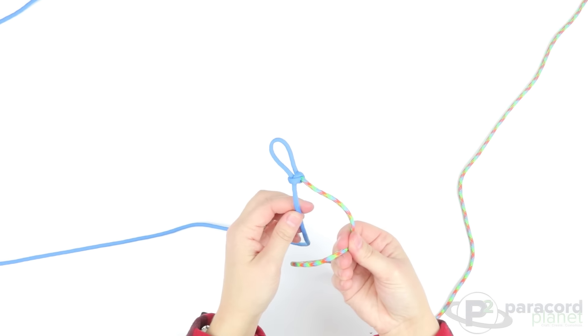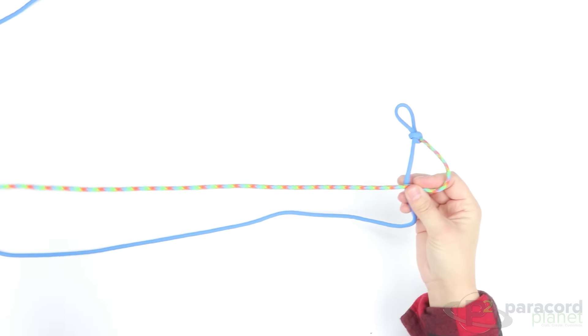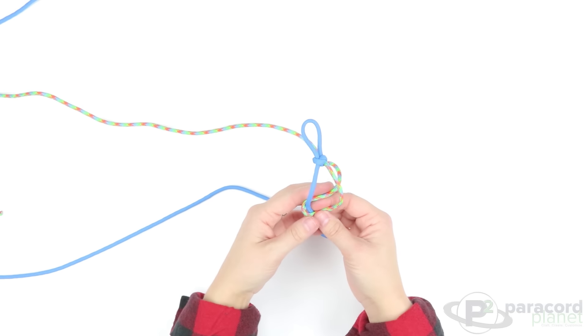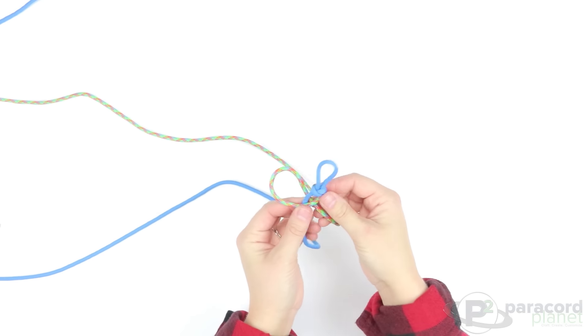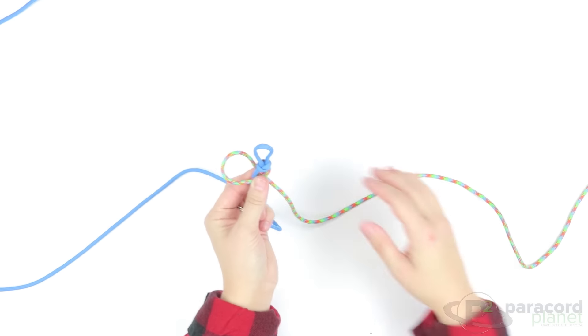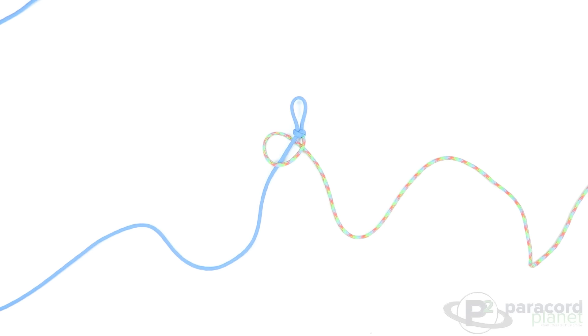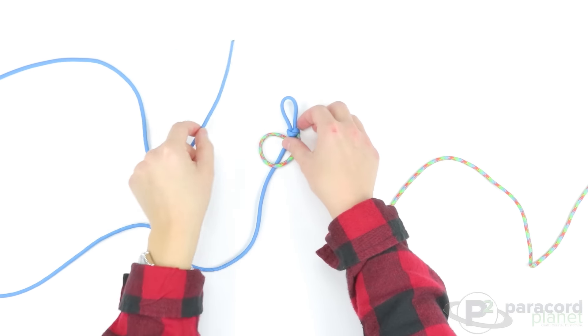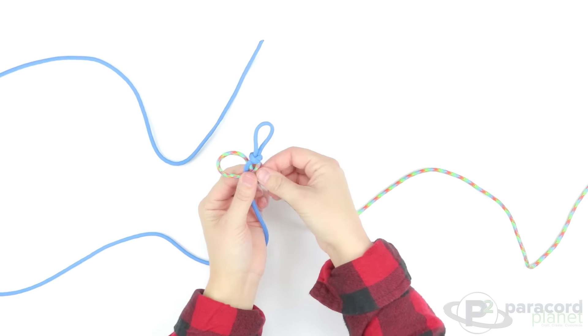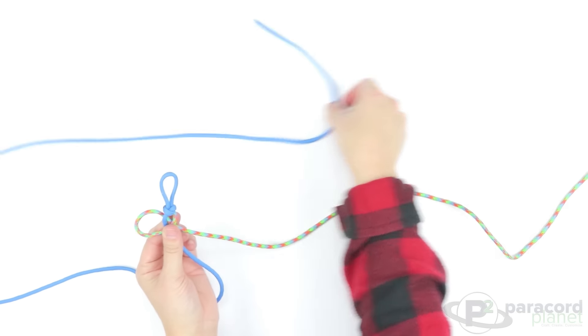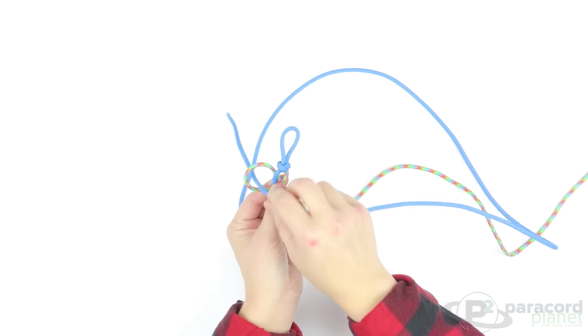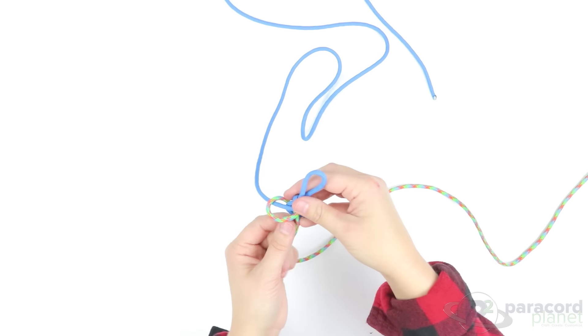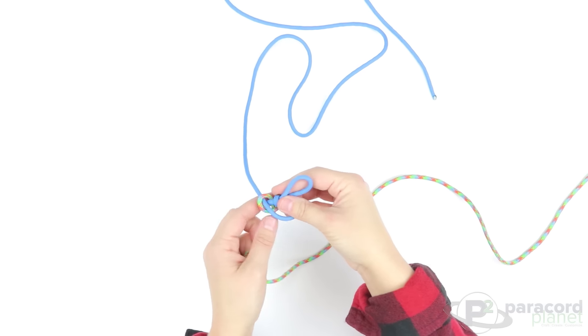Now again you will start with your cord on the right, loop it over the cord on the left. Take it behind so that now the loop is over here on the left side. Take your cord on the left and go behind your cord on the right and down through the loop. And then pull those tight.